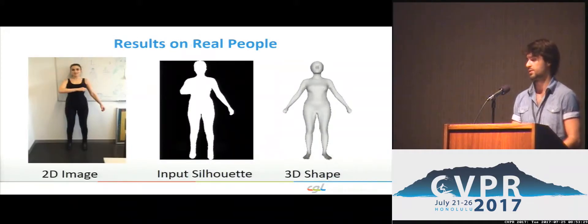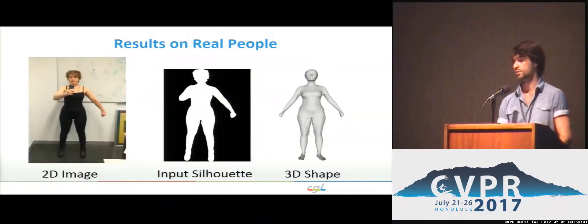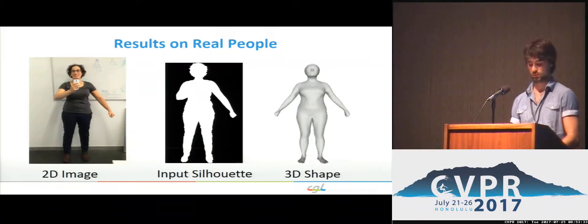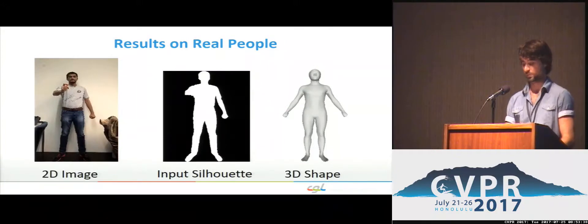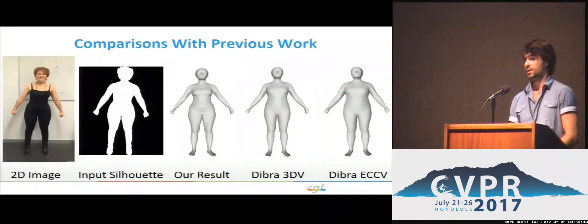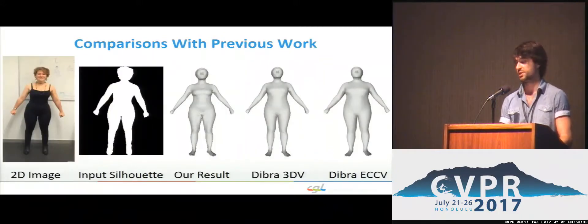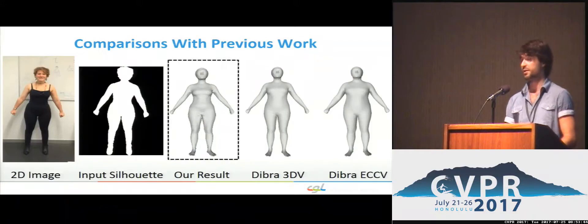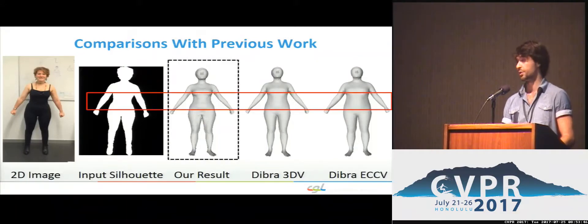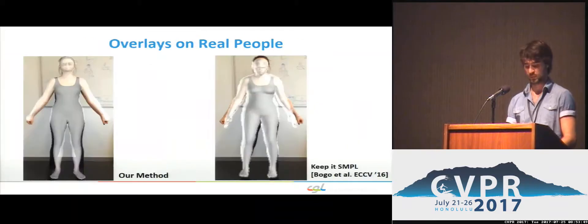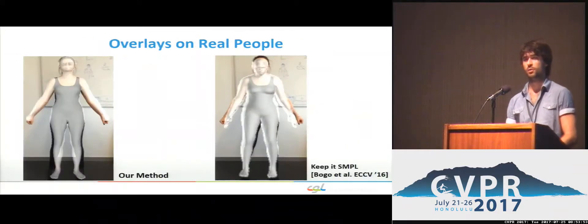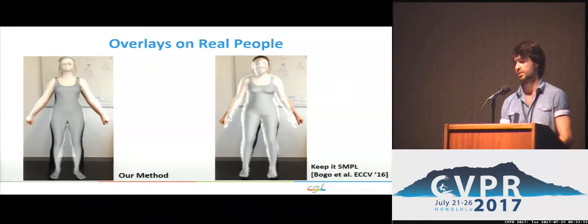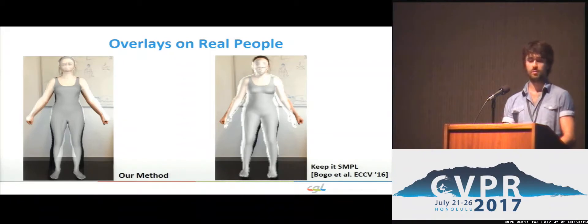And now let's show some qualitative results, with silhouette as input and 3D shape as output. Here we compare to previous work. Please note how our method shows a clear improvement in the estimated region around the waist. We also show overlays and compare to the method from Keep It Simple, which actually focuses more on pose estimation. While the latter finds a more accurate pose, our method estimates a more accurate shape.